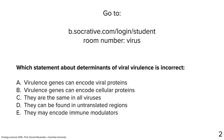Which statement about determinants of viral virulence is wrong? Virulence genes can encode viral proteins; they can encode cellular proteins; they are the same in all viruses; they can be found in untranslated regions; they may encode immune modulators. The answer is C — they are the same in all viruses. That's clearly incorrect. Virulence genes are not the same in all viruses.